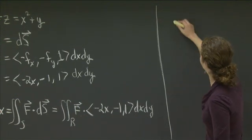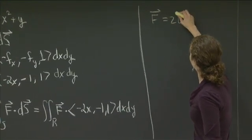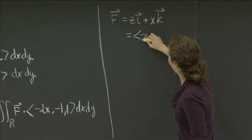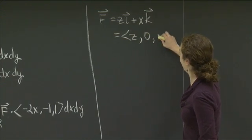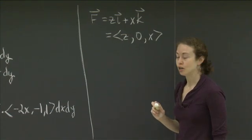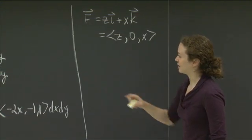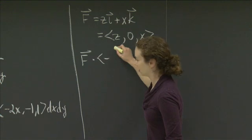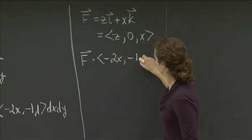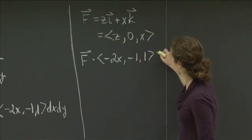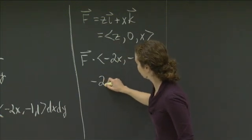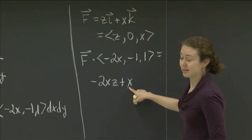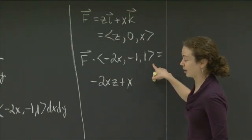So F, I'm going to remind myself, F was equal to zi plus xk, which if I write that in component form, it's z comma 0 comma x. So F dotted with our minus f sub x minus f sub y 1, which was minus 2x minus 1, 1, we see we get minus 2x dotted with z, we get minus 2xz, and then we get 0, and then we get x. So we get minus 2xz plus x. That's exactly what F dotted with the vector we have is.